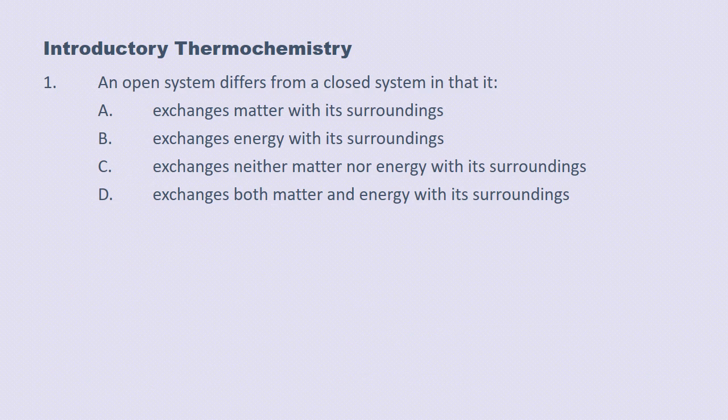An open system differs from a closed system in that it, A, exchanges matter with its surroundings. Well, that's true. But is that the difference between the two? In fact, I think that is. Let's look at our other choices. It exchanges energy with its surroundings. Well, yes, it does. But so does a closed system. It exchanges neither matter nor energy with its surroundings. No, that's not true. It exchanges both matter and energy with its surroundings. Yes, that is true. But that's not the difference between an open and closed system. The difference between the two is that an open system exchanges matter with its surroundings, and a closed system does not. It's a tough question, but the answer here is A.